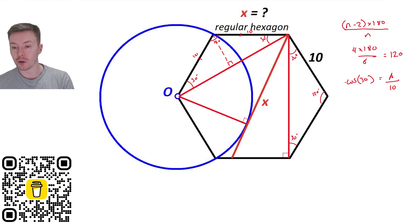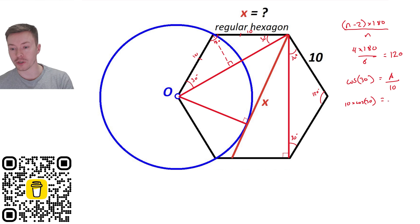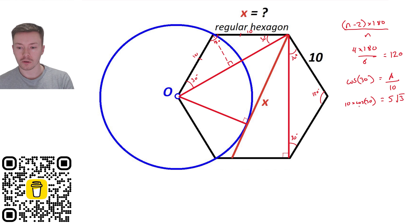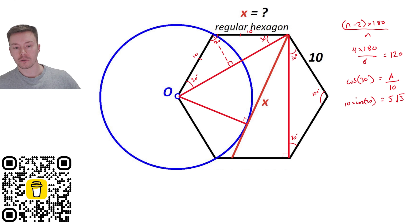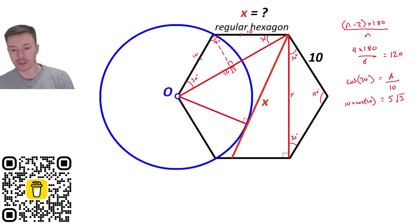So 10 times cos 30 gives the adjacent, which is 5√3, because cos 30 is √3/2. Doubling that to get the full length gives 10√3. So this full introduced length is 10√3, and the matching length on the right is also 10√3.